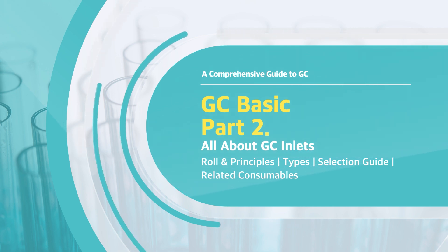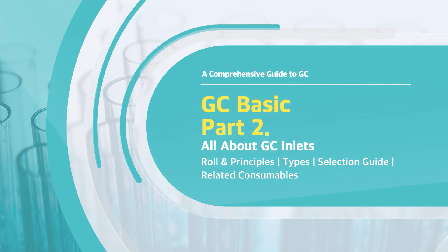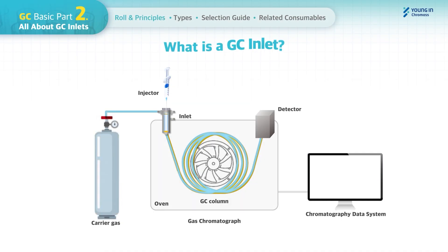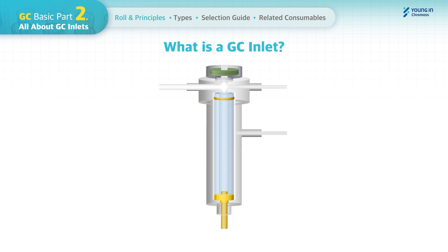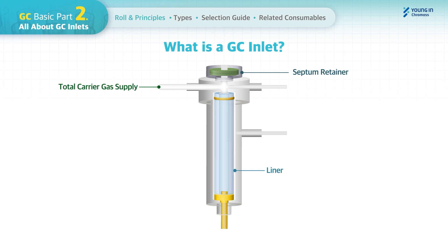What is a GC inlet? The main role of the GC inlet is to deliver an accurate and reproducible sample introduction into an analytical column. A GC inlet is commonly configured with a septum retainer, an injection port, a total carrier gas supply line, and a liner where the liquid samples get vaporized, along with a septum purge line and split vent line.